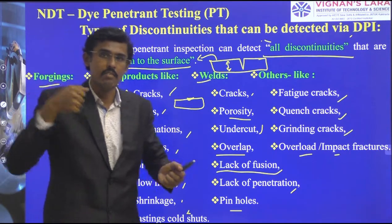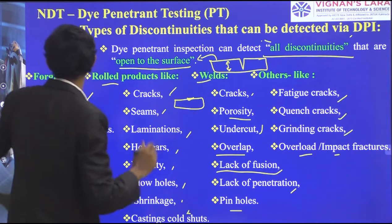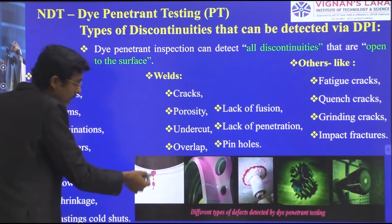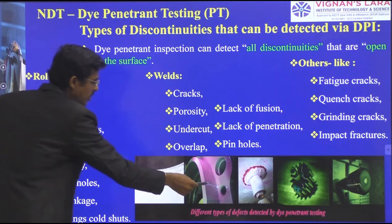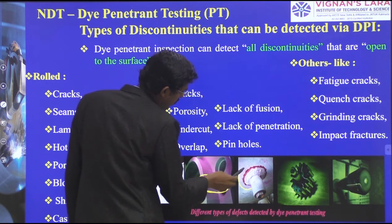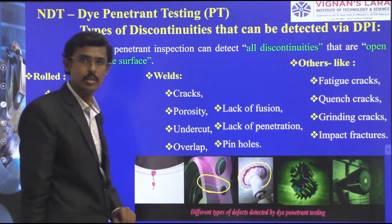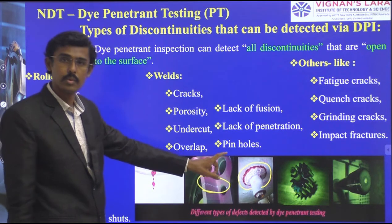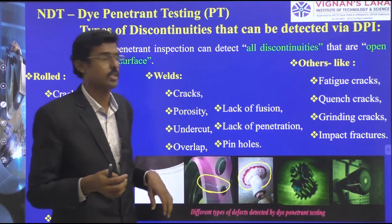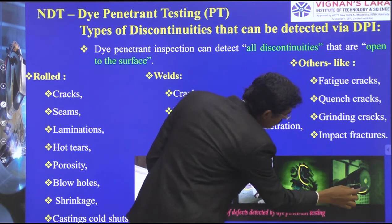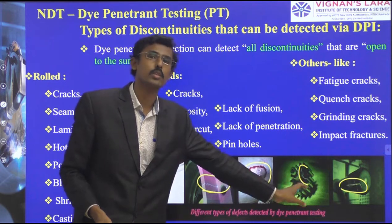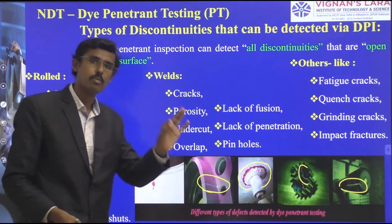Different types of detections are shown here — di-penetrant inspection has been used. You can see cracks on the component. In a weld joint between two components, circumferential welding cracks are detected by di-penetrant inspection. In the next two pictures, fluorescent high-contrast inspection is used, where refraction takes place and cracks are visible under ultraviolet light. So two images belong to fluorescent ultraviolet inspection, and three belong to di-penetrant normal visual inspection.